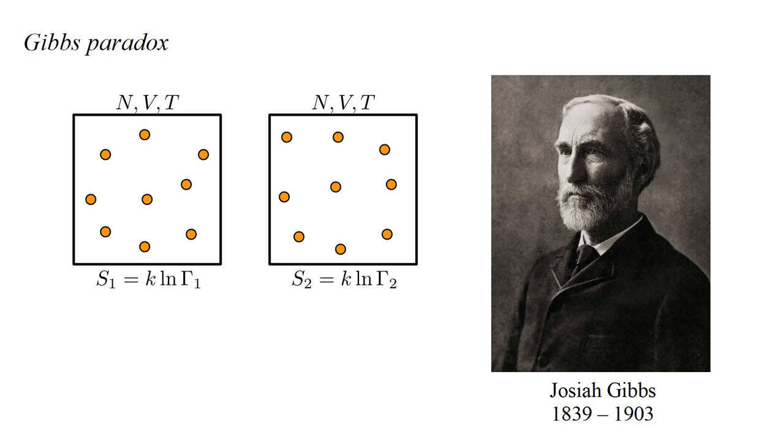And we have a second system with the same N, V, and T values, entropy S-two and arrangements Gamma-two.